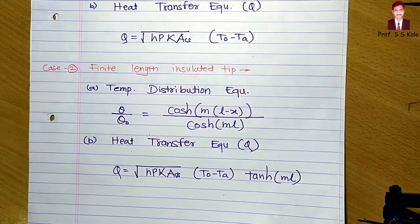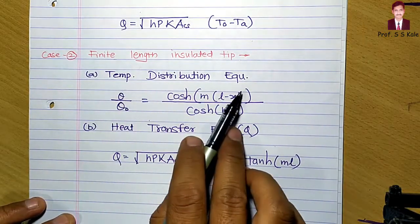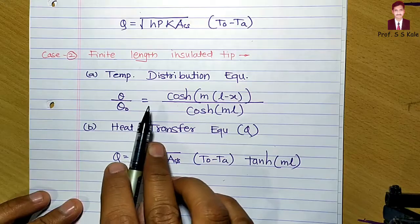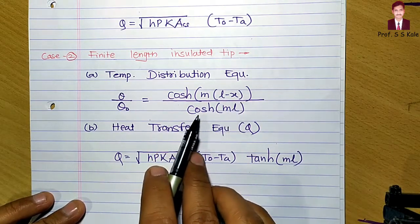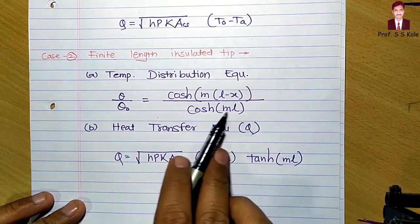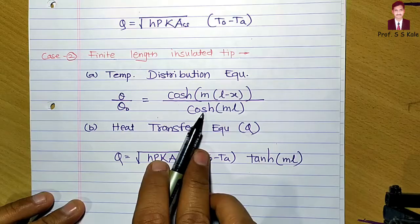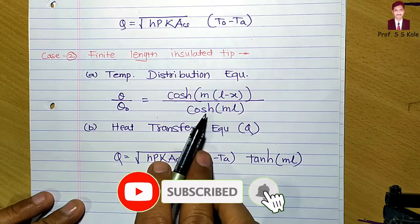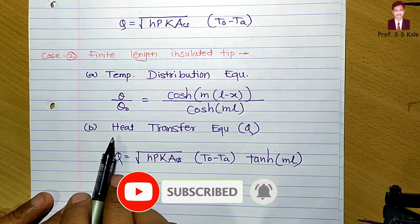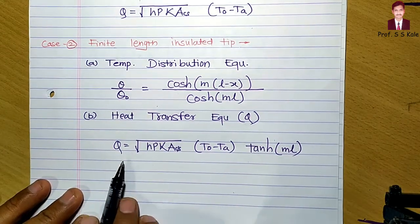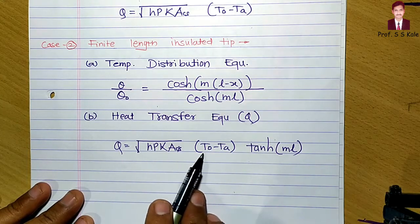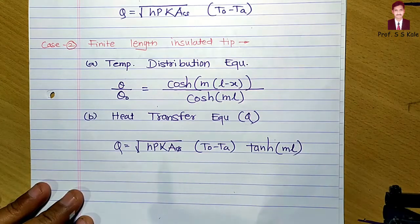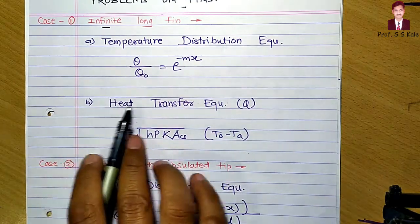For the second case — finite length with insulated tip — the temperature distribution equation is: theta divided by theta-zero equals cosh(m(L minus x)) divided by cosh(mL). The heat transfer equation for this case is: Q equals the square root of hPkA, multiplied by (T_0 minus T_a), multiplied by tanh(mL).